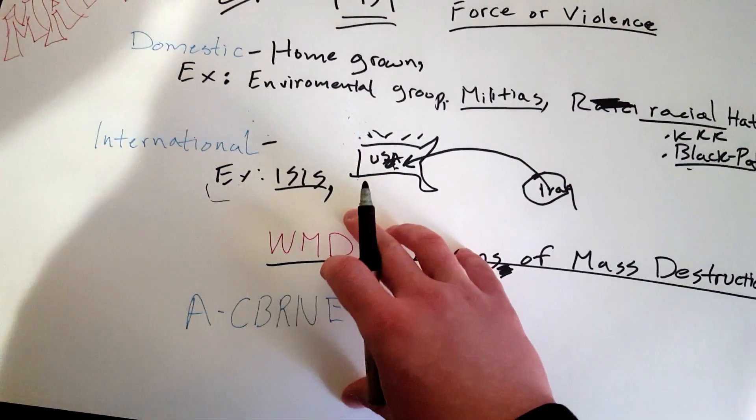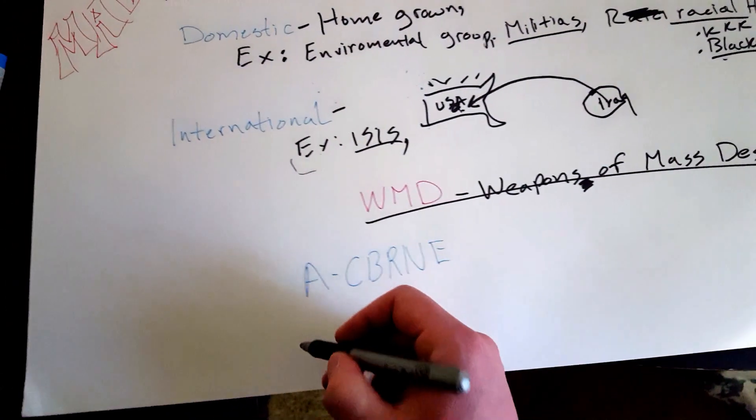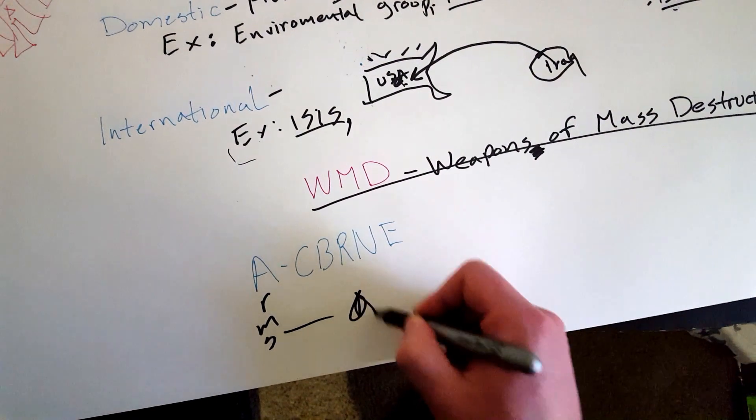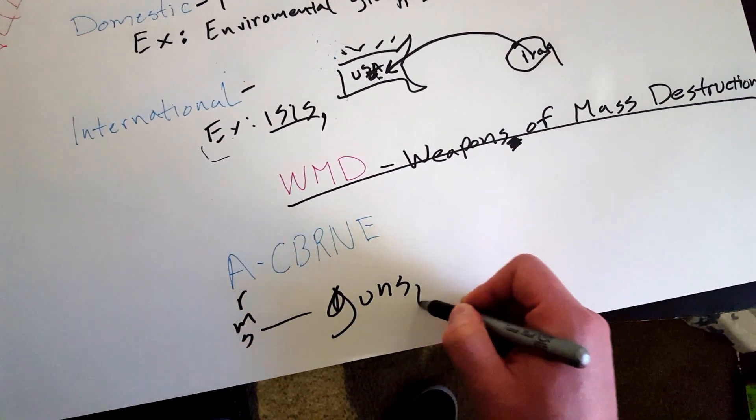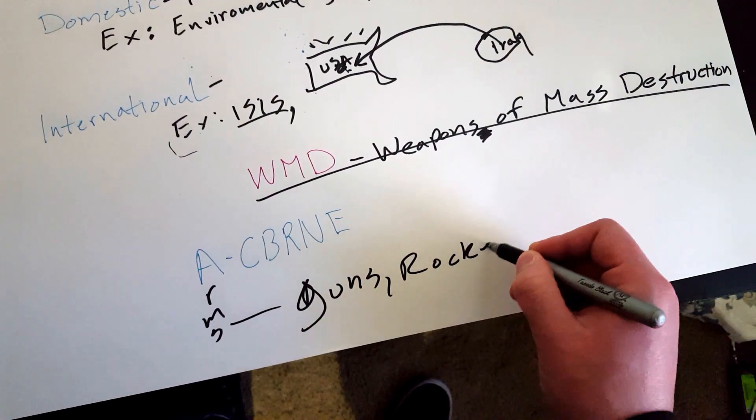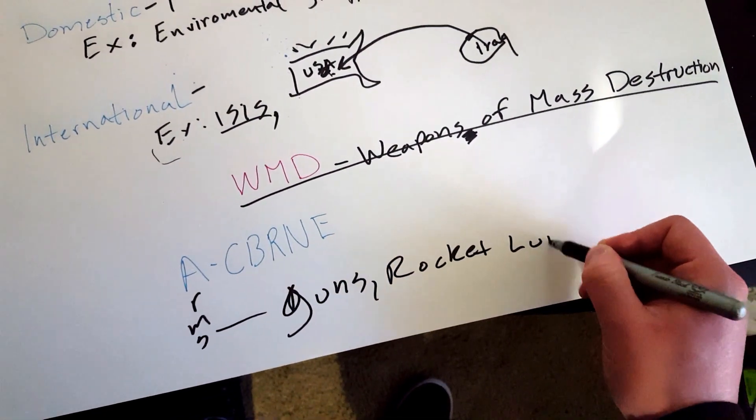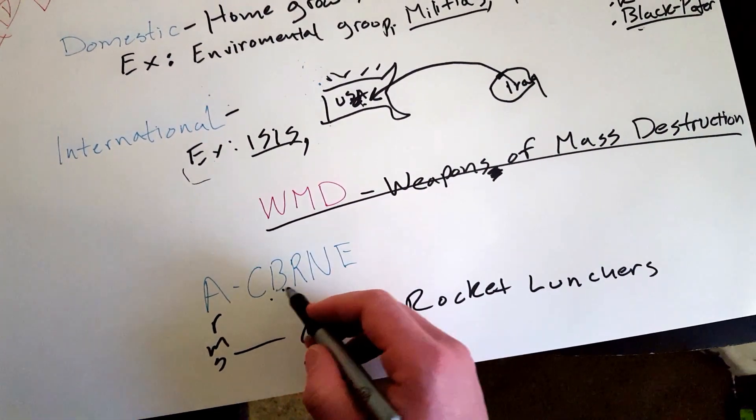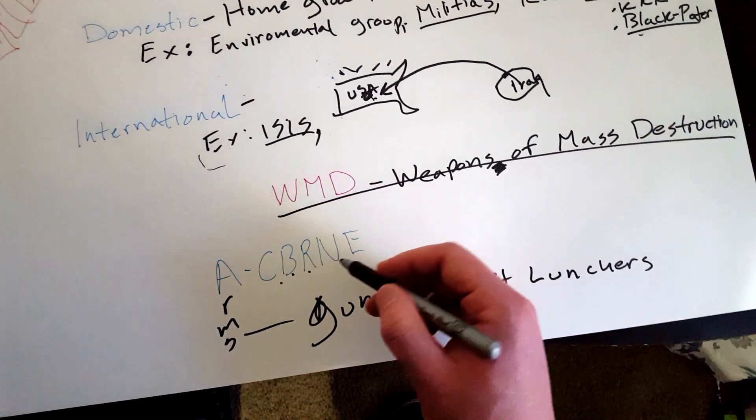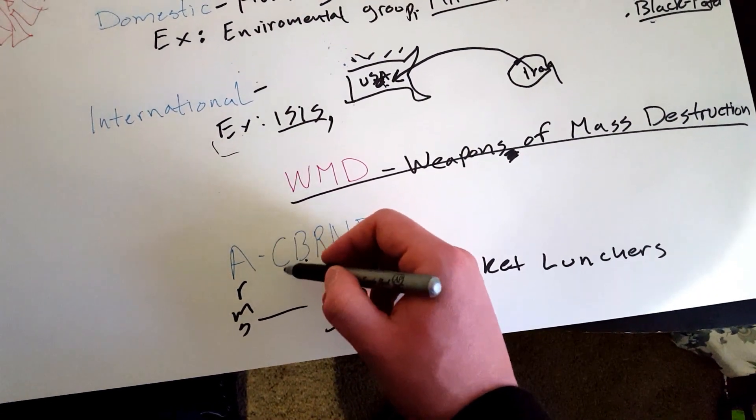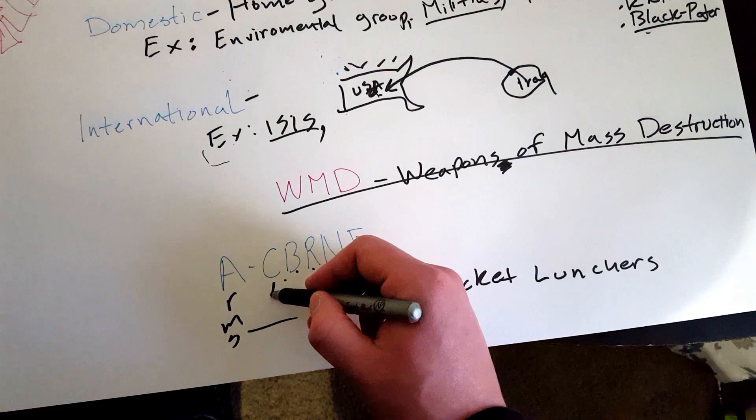So weapons of mass destruction. Now an easy way to remember the different types of weapons of mass destruction that terrorist groups can use is A-CBRNE. A stands for arms—this could be guns, bazookas, rocket launchers. Then you have chemical, biological, radiological, nuclear, and explosives.